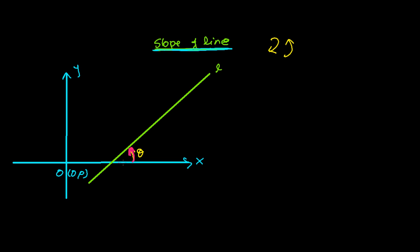This angle theta is called the inclination of line L. It is measured as the angle made by the line with the positive direction of the x-axis, and while measuring, we always measure in the anti-clockwise direction. So theta is the inclination. The slope of the line, which we represent by m, is defined as the tangent of the inclination — that is, tan(theta) — where theta is the angle made by the line with the positive x-axis in the anti-clockwise direction.